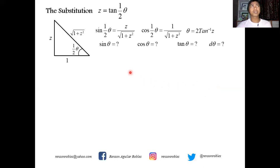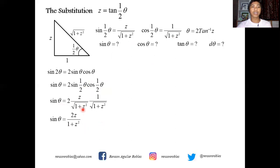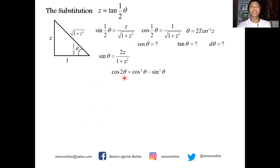To find sine theta, we use the double angle identity: sine 2θ equals 2 sine θ cosine θ. This gives sine θ equals 2 sine(½θ) cosine(½θ). Replacing sine(½θ) with z over √(1+z²) and cosine(½θ) with 1 over √(1+z²), we get sine θ equals 2 times z over (1+z²) times 1 over (1+z²), which simplifies to 2z over (1 plus z squared).